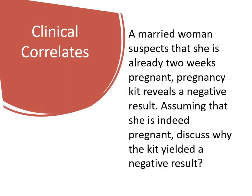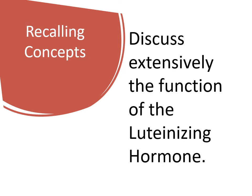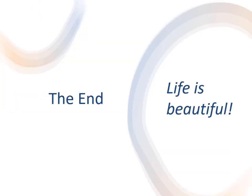Consider these clinical correlates for discussion: A married woman suspects she is two weeks pregnant, but the pregnancy kit reveals a negative result. Assuming she is indeed pregnant, discuss why the kit yielded a negative result. Additionally, discuss extensively the function of the luteinizing hormone from ovulation down to its role in implantation. This ends our lecture — life is beautiful.